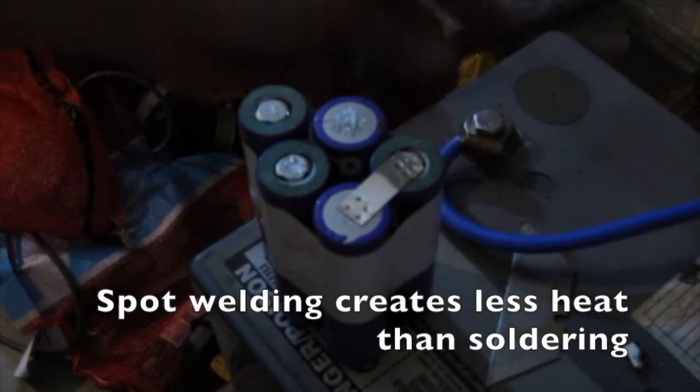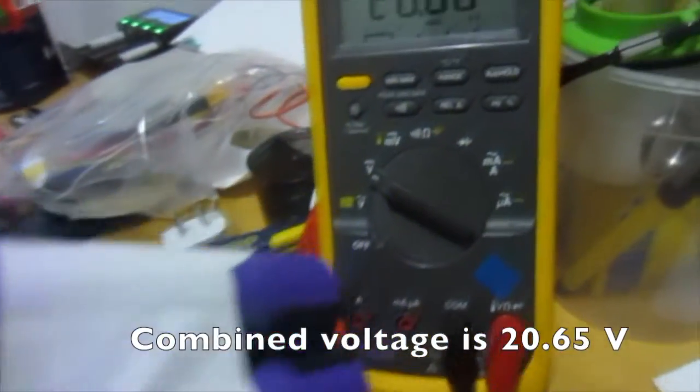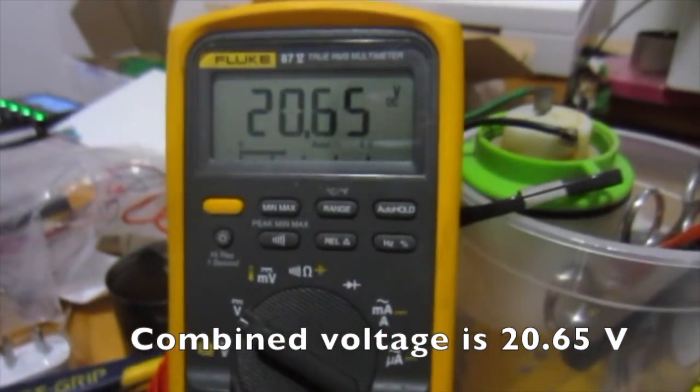Spot welding creates less heat than soldering. The combined voltage is about 20.65 volts.